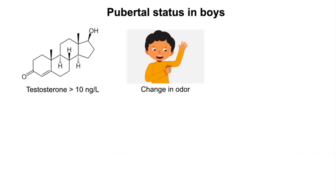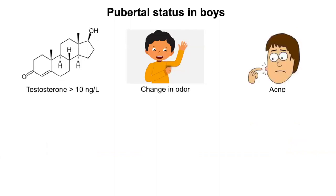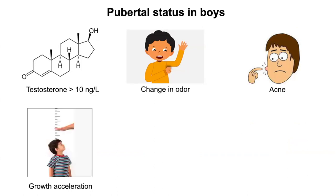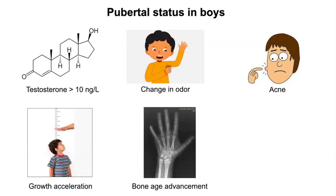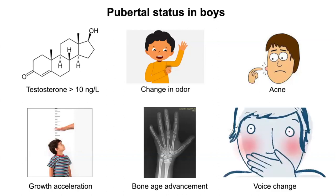Pubertal status in boys is assessed with clinical examination and basic investigations. A testosterone level more than 10 ng/dL is associated with onset of puberty. Puberty in boys is associated with mild hyperandrogenic changes leading to body odor and acne, growth acceleration, bone age advancement, and voice change — which indicates significant pubertal advancement and limited remaining growth potential.